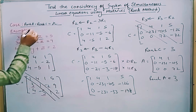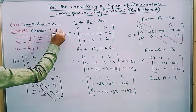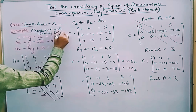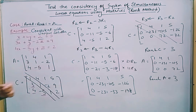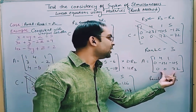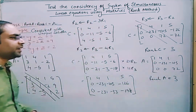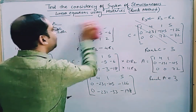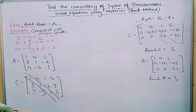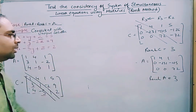Hence, the given system is consistent with a unique solution. To find that unique solution, we can perform backward substitution. I have already made a video on solving simultaneous linear equations using matrices — you can watch that in detail. Let us solve this here as well.